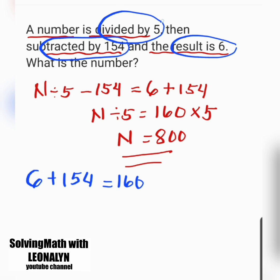Next, divided by 5. So instead of dividing by 5, we will do multiplication. So 160 times 5 and this is equal to 800. The number is 800.